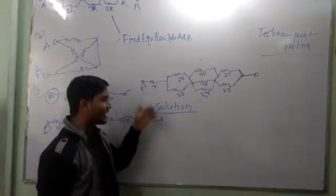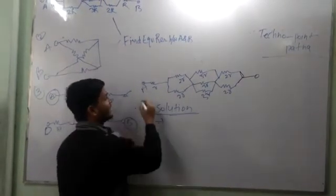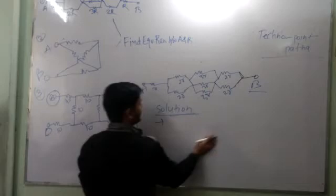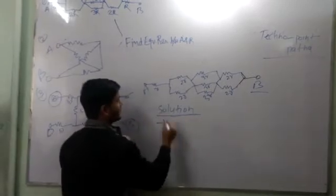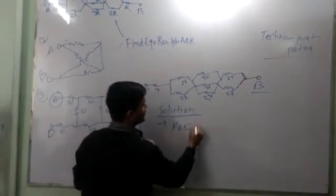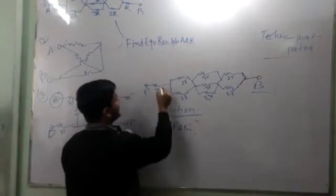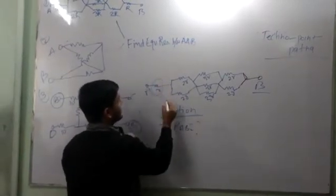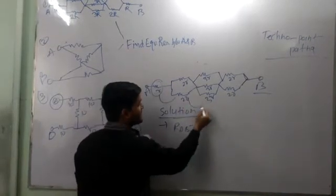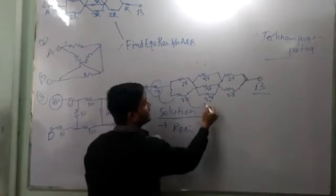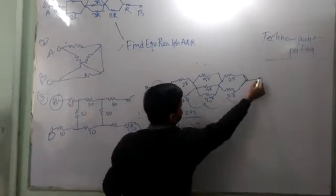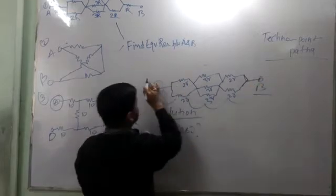Between A and B, when we solve the problem for R, A and B is equivalent. This is R resistance. This is in series, and this is in series, and this is in series.